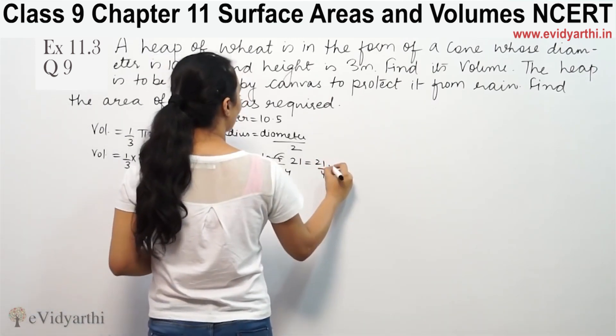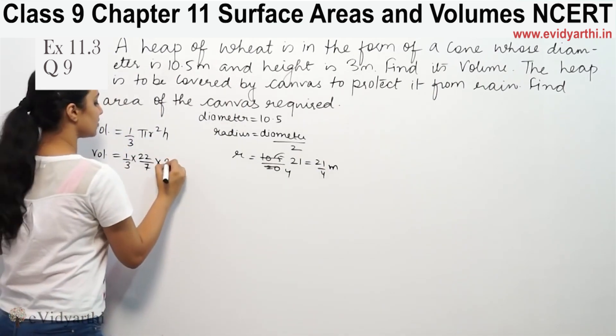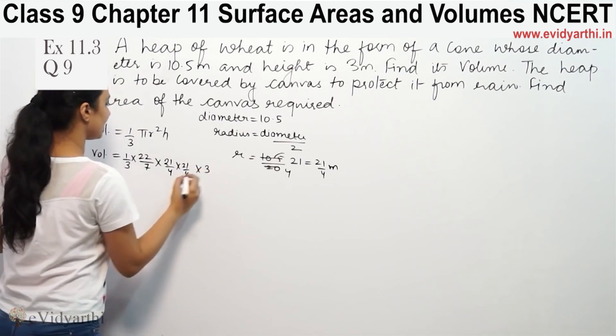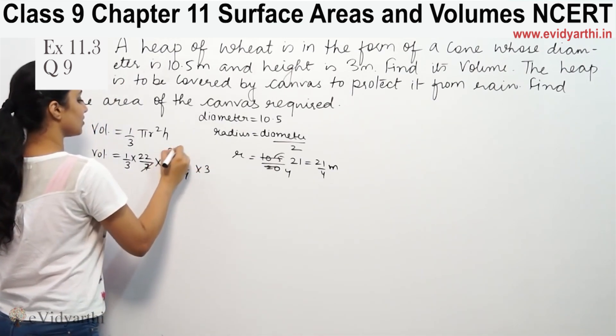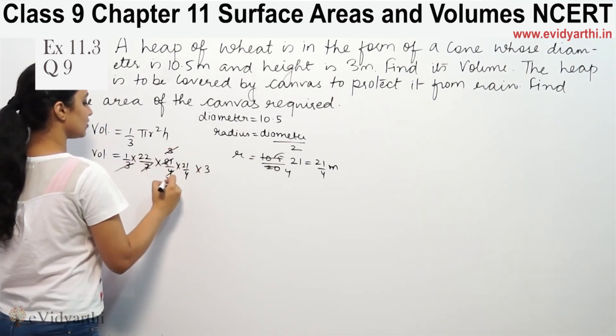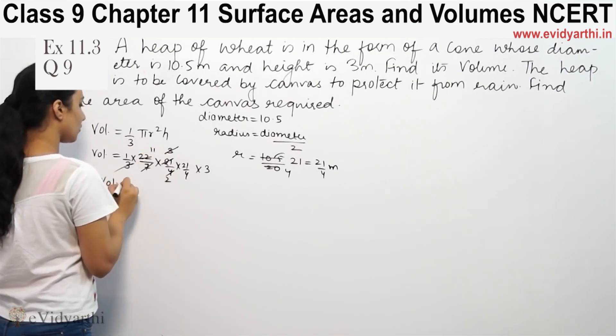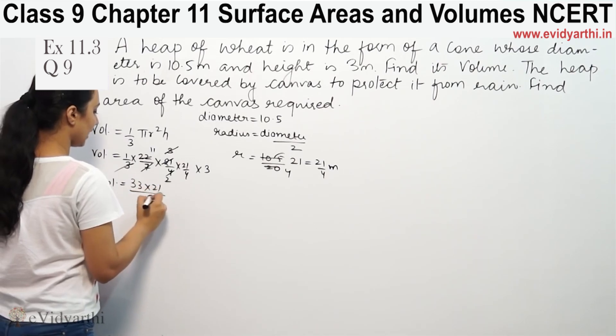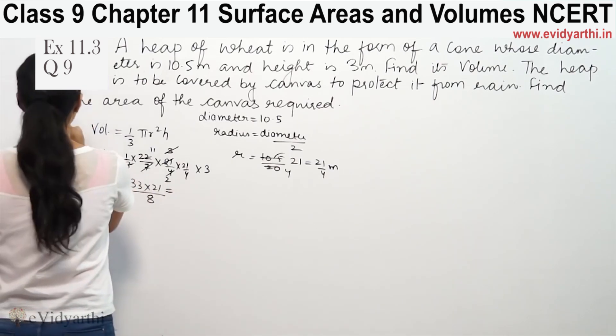Now height is given and radius is given. So radius is 21 by 4 times 21 by 4, and height is 3. Canceling and simplifying, volume is 33 times 21 by 8.